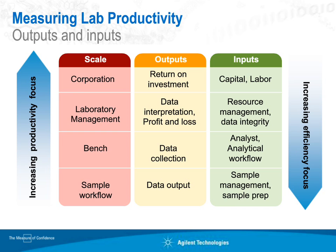Looking at this table, as we work from the top down, that's increasing efficiency focus — you're more focused on minimizing inputs and concerned with things like sample prep and management, sample workflow, and data output. Whereas moving from the bottom up, that's increasing your productivity focus, and the higher up you go, usually the higher up in the organization you're going as well. At the bottom of the chart, this is much more in the lab on the front lines doing sample work; at the top of the graph, this is at a corporate level where executives are concerned with return on investment and balancing capital and labor inputs.